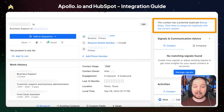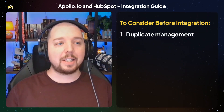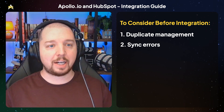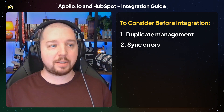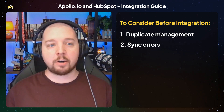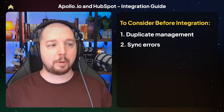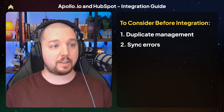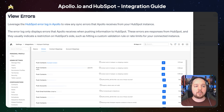Apollo has features that will recognize potential duplicates and display a message to alert you so you can merge them directly from the record. The second thing you should look out for are sync errors. Apollo has an error log within its integration settings that will show error messages Apollo receives when sending information into HubSpot. Common errors include things like invalid property values or data restrictions like HubSpot requiring contacts to have email addresses. You should monitor these errors to ensure your data enrichment is working smoothly.